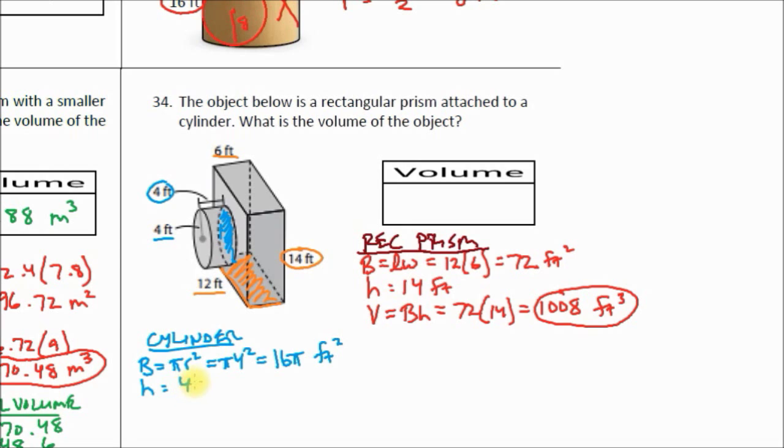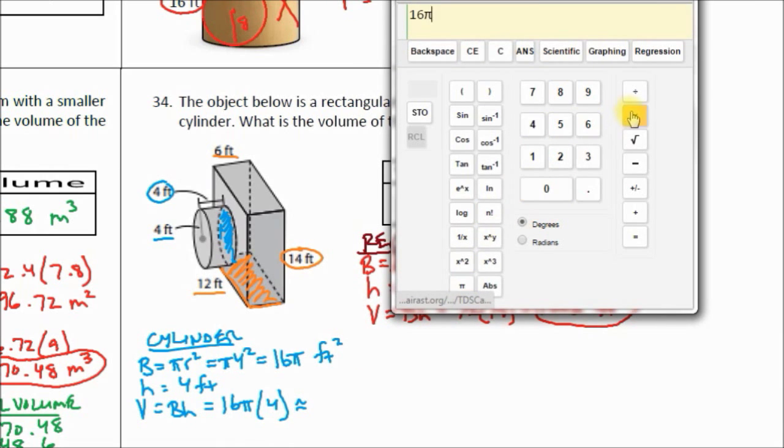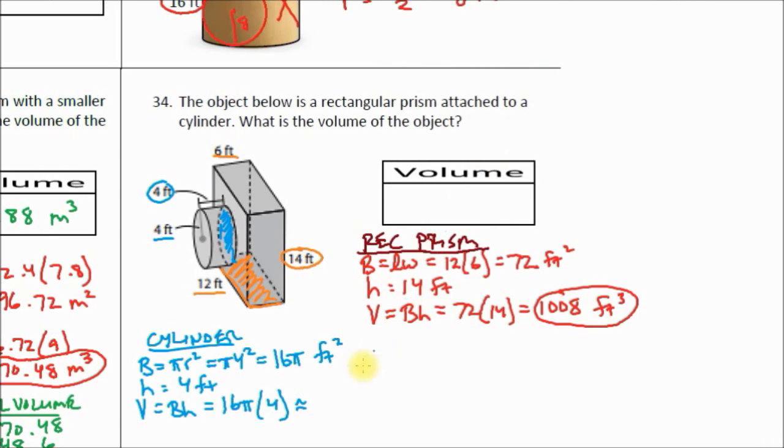Our height, we've already circled it, is 4 feet. Our volume is base area times height, which is 16 pi times 4. Let's put that in our calculator, 16 pi times 4 equals 201.06. We can drop the third decimal. So 201.06 feet cubed. And now we know our total volume.